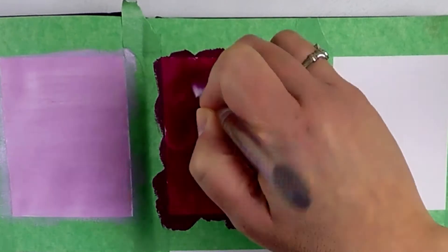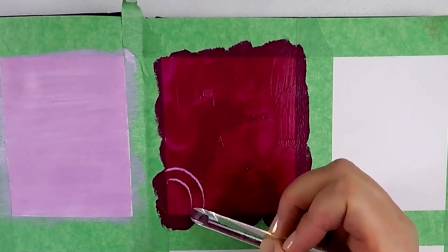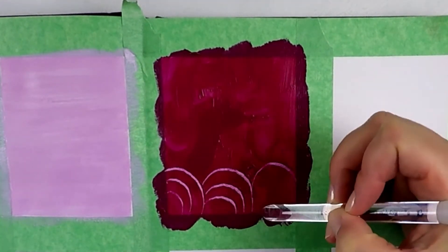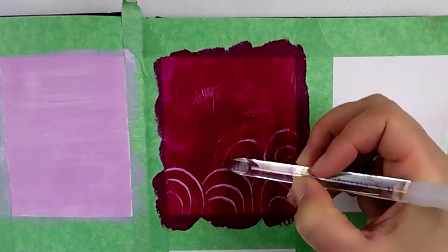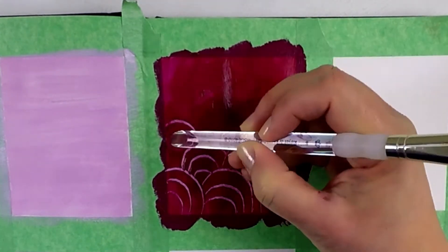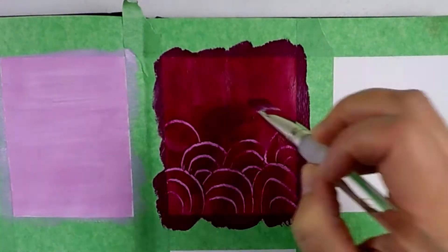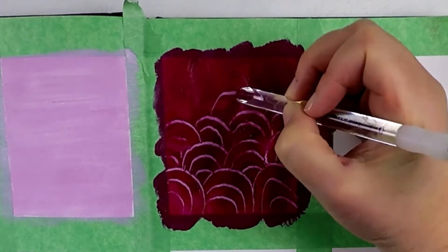Combing is applying a thick layer of wet paint and then before it dries flip your paint brush over and use the other end to scratch lines, patterns, shapes into it. It's a really cool effect.